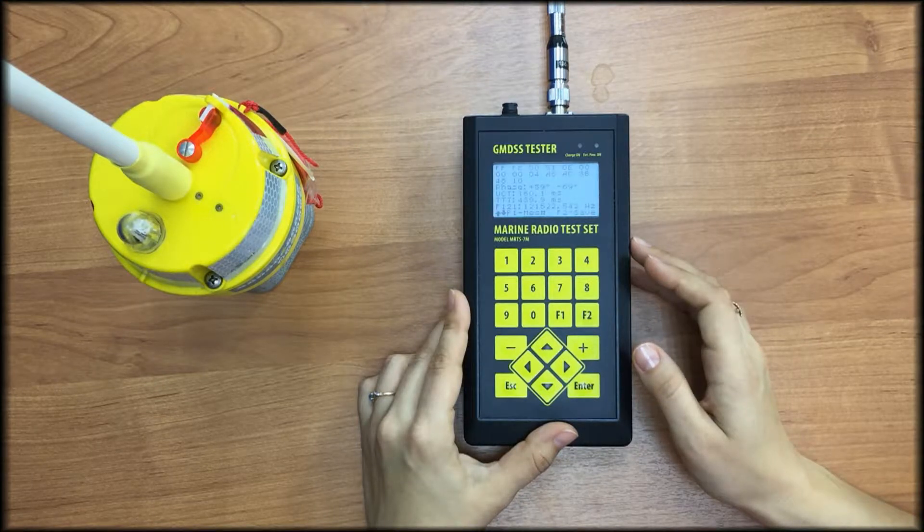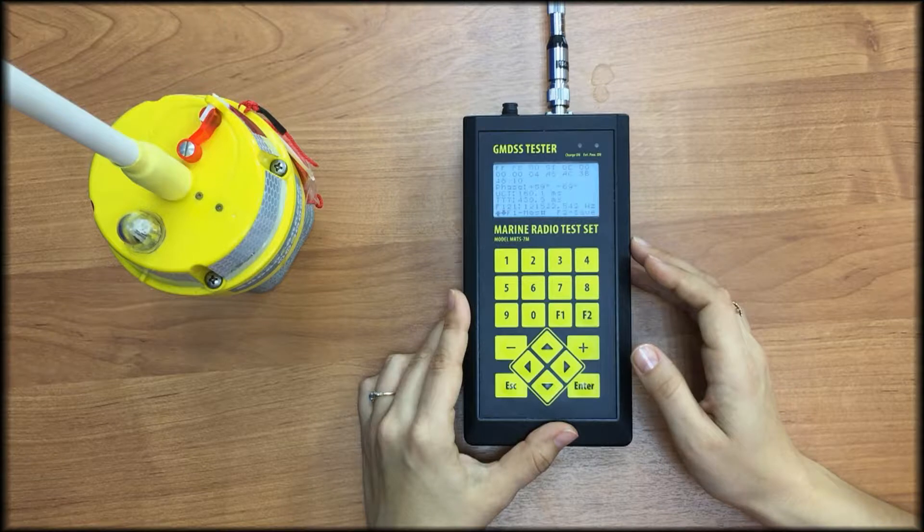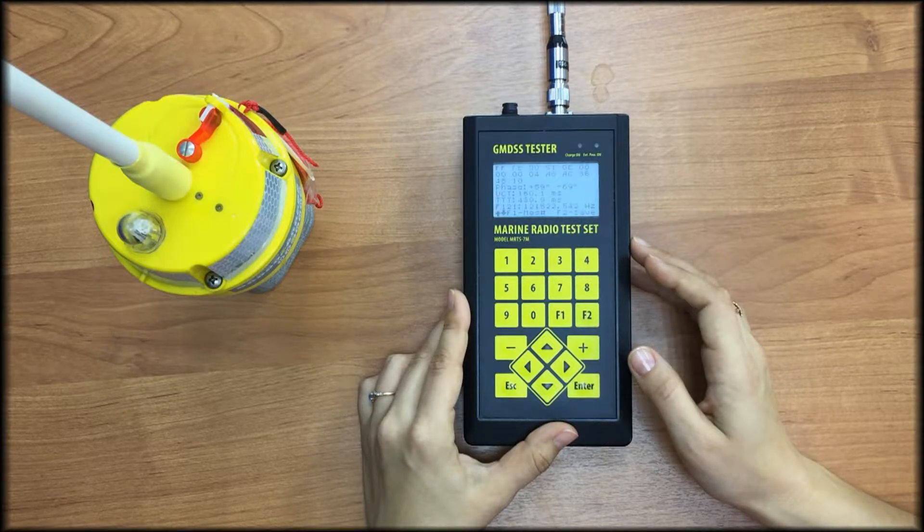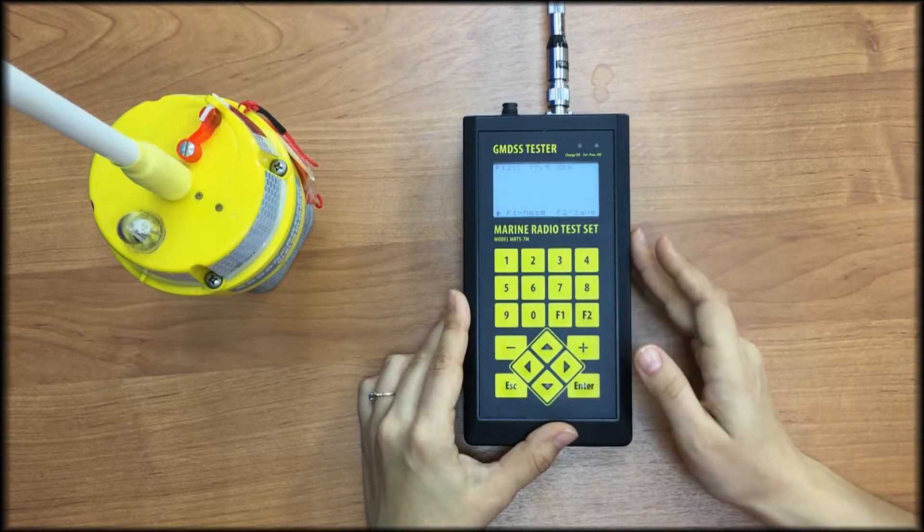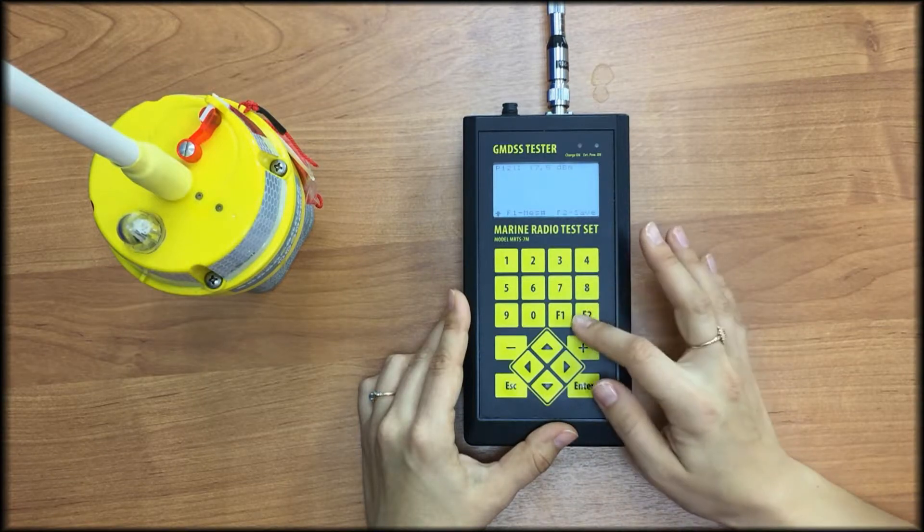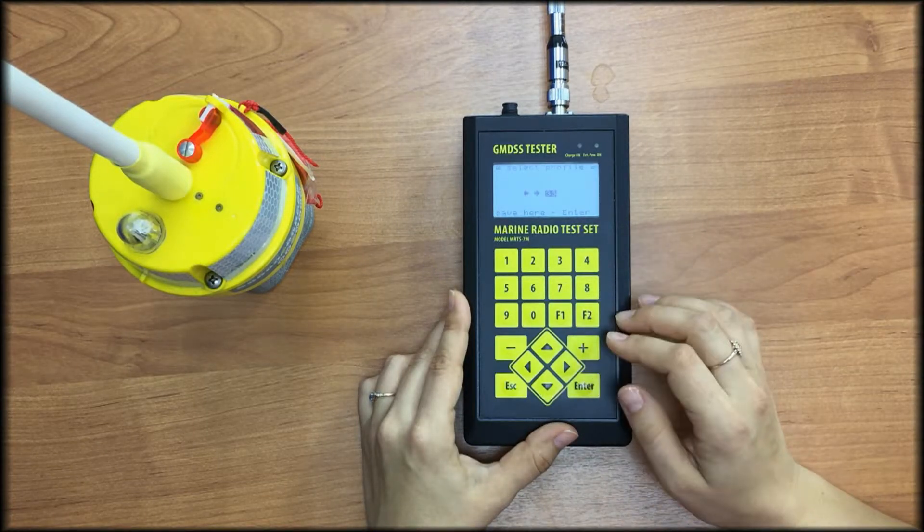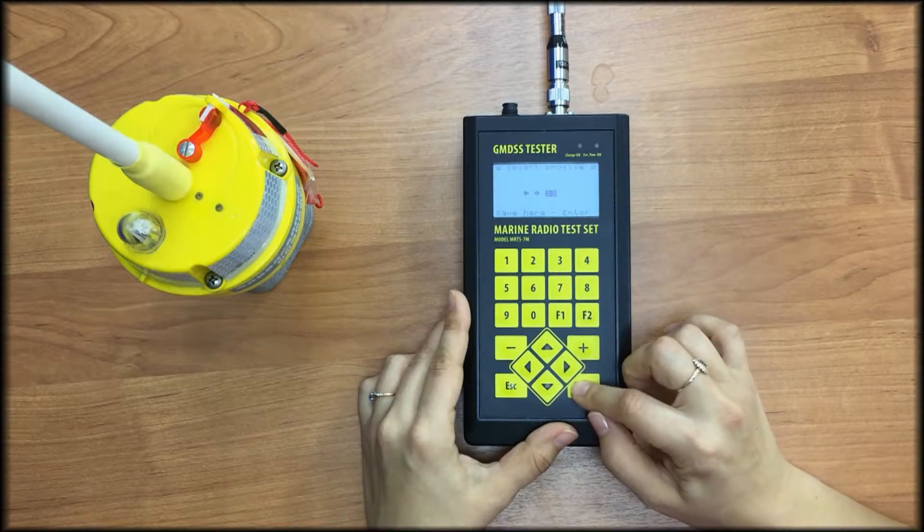Unmodulated carrier duration, total transmission time. Then the homing signal measurements, its carrier frequency in hertz and power level in dBm. We press F2 to save results. Press enter to confirm the profile number. It's saved in profile number 33.